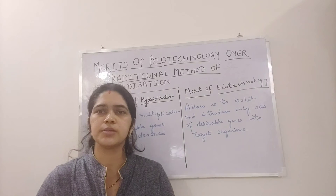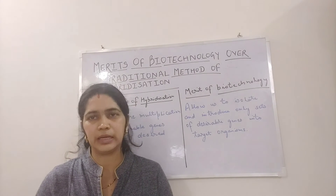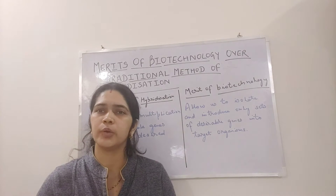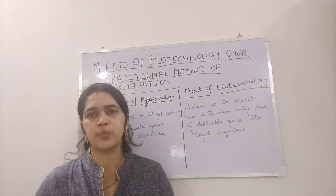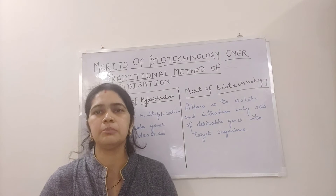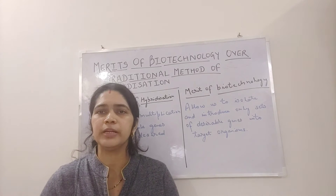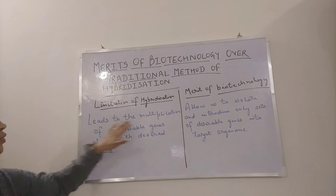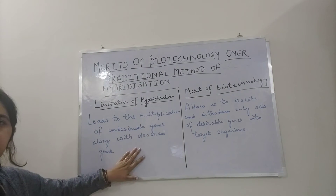As we all know, hybridization is the process of combining two single-stranded DNA or RNA molecules, allowing us to form a single double-stranded molecule through base pairing. This procedure is used in plant and animal breeding programs. Here, the major limitation of hybridization is that it leads to the multiplication of undesirable genes along with the desired gene.